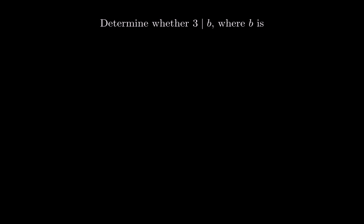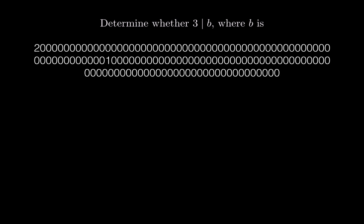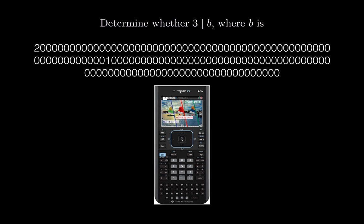Suppose we want to determine if the number 3 divides b, where b is a large integer shown on screen. Suppose you have a TI-NSPIRE Texas Instruments calculator, which is a decent calculator by today's standards, and you start inputting this number. How long do you think that's going to take? Probably not a short time. Did you notice there is a 1 right here?